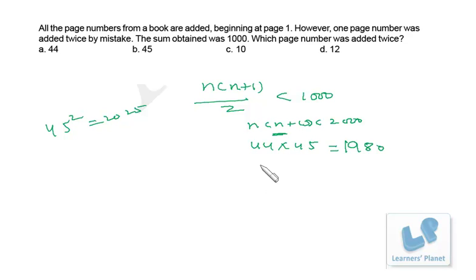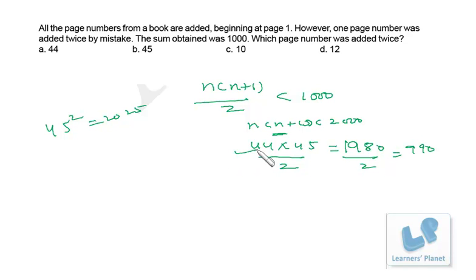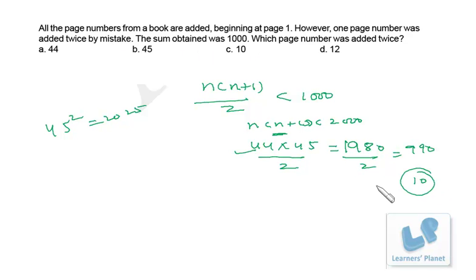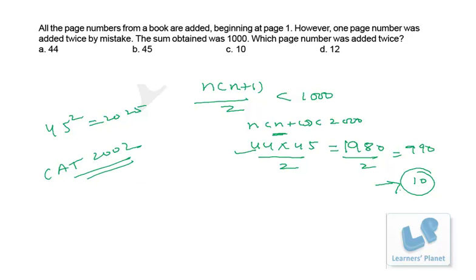So n(n+1)/2 equals 990. With 44 numbers added, 44 × 45 / 2 = 990. The sum we are getting is 1000, so 1000 minus 990 equals 10. Therefore, page number 10 was added twice. This problem from CAT paper 2002 is solved.